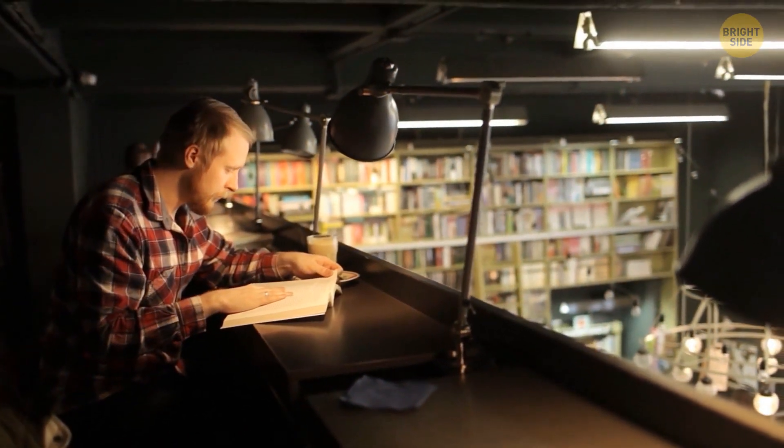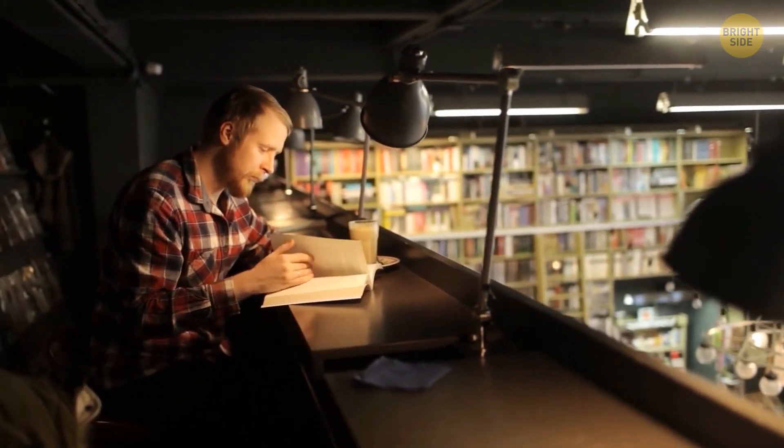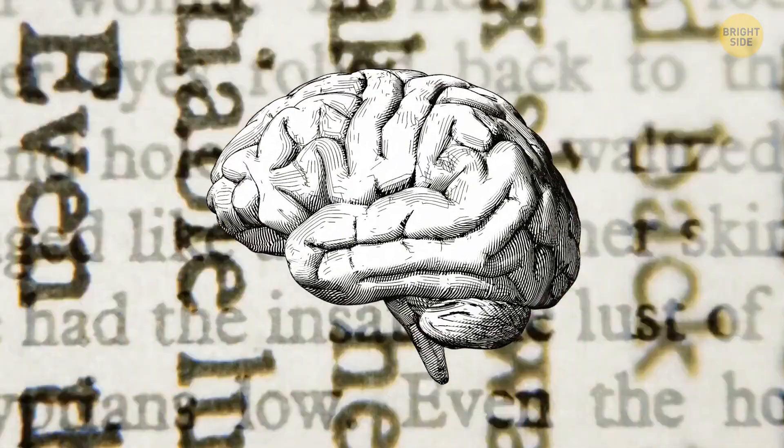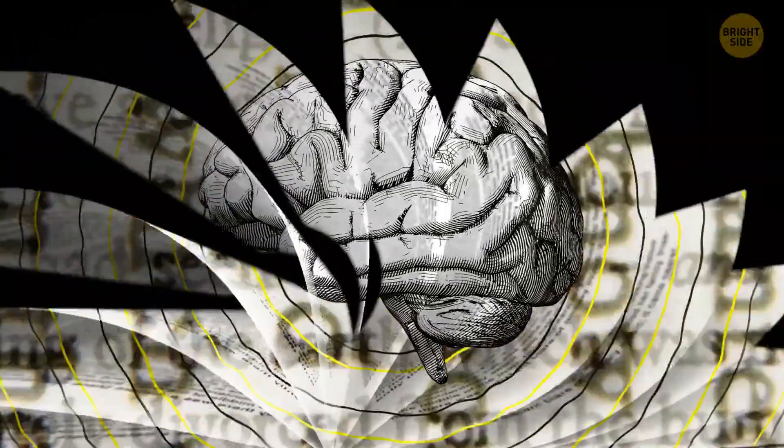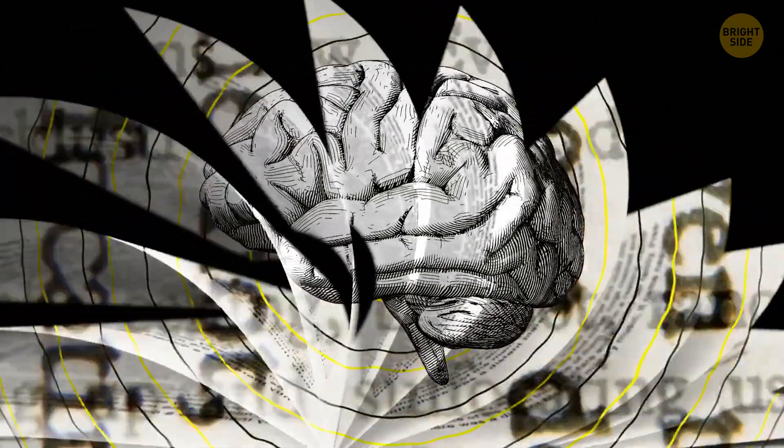Now, when it comes to reading, our brains can amp up that skill. Sometimes, reaching up to 1,000 words per minute. If you do the math, it means your brain can read a 300-page book in just 2.5 hours.